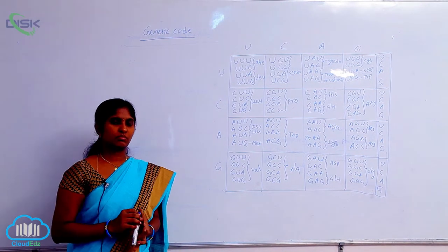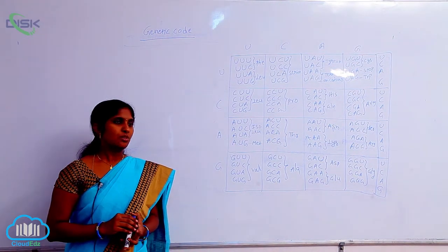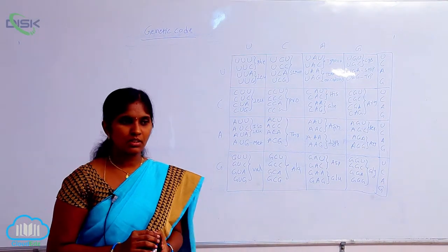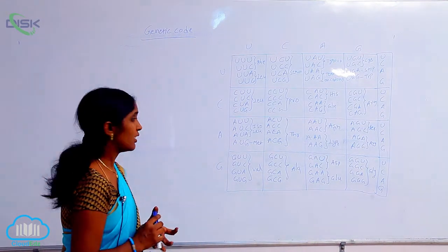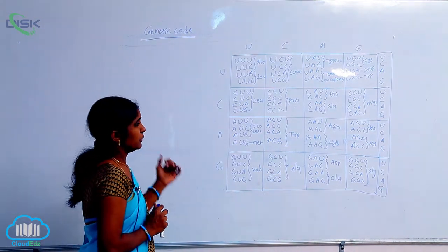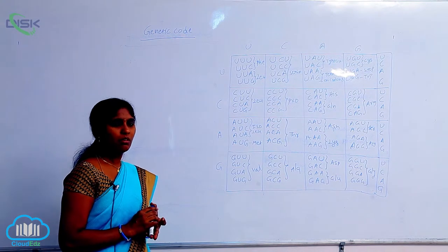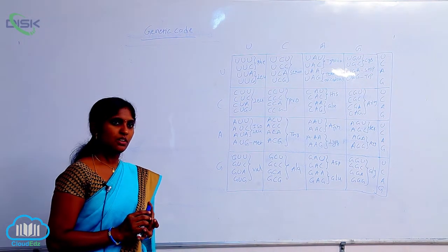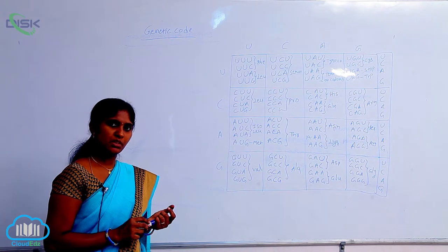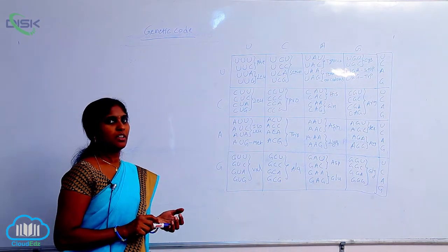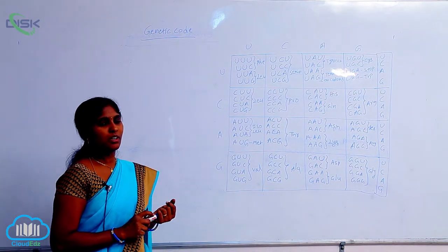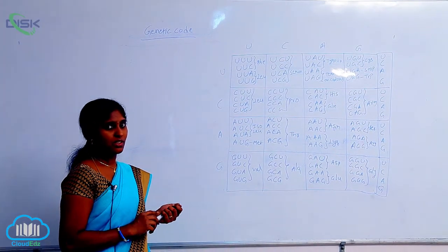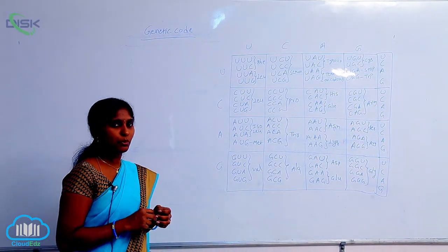Genetic code. During translation, polymerization of amino acids occurs. During polymerization, all the amino acids are formed and polymerized as a polypeptide chain according to the genetic information present on the mRNA. That is done in protein synthesis.